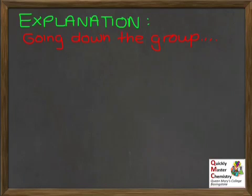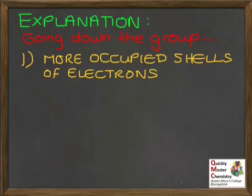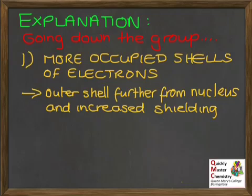As well as describing the trend in first ionisation enthalpy going down a group, we need to be able to explain it. The explanation involves several features, so listen carefully. Going down the group, you're going to see more occupied shells of electrons — each new period introduces one more occupied shell. This means, firstly, that the outer shell will be further away from the nucleus, and secondly, there will be increased shielding of the outer shell from the nucleus because of the occupied shells in between.